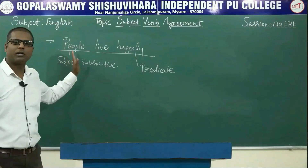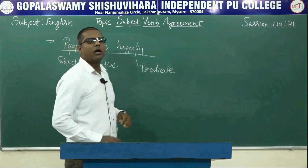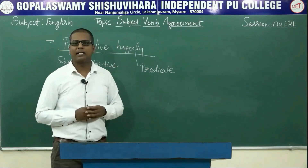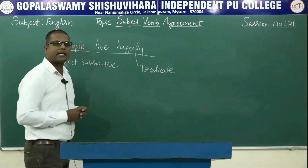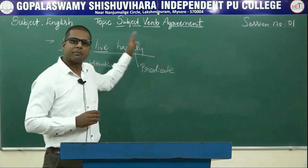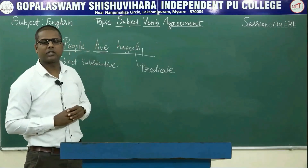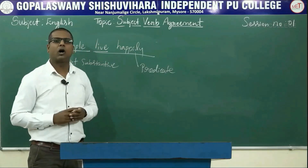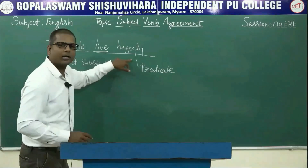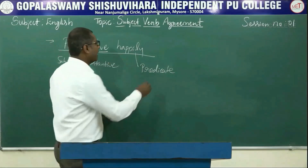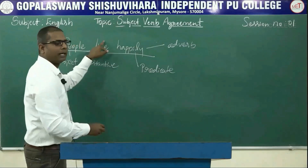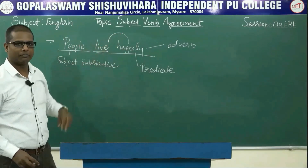The predicate of a sentence should always have a verb in it. In 'People live happily,' the word 'live' is the verb — it talks about the subject 'people.' The word 'happily' is an adverb that adds to the meaning of the verb 'live.'